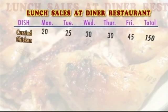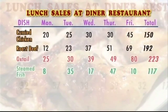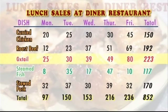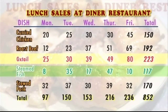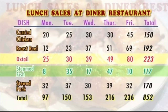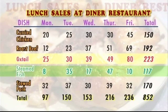Imagine that a small restaurant serves five main dishes and keeps a record of the number of each dish ordered by its customers on a daily basis over a five-day period. You will notice that the most popular dish for the week was oxtail, while the least popular was steamed fish. These are two examples of statements about Significant Figures, as the sales from one dish stood out as the highest, while those of another stood out as the lowest.